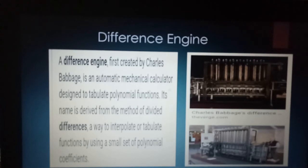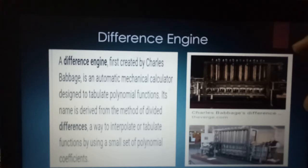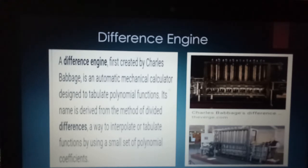Now here comes the father of computer — Charles Babbage. The Difference Engine was created by Charles Babbage as an automatic mechanical calculator designed to tabulate polynomial functions. Its name is derived from the method of divided differences — a way to interpolate or tabulate functions using a small set of polynomial coefficients. In the 19th century, Charles Babbage invented the first mechanical computer, known as the Difference Engine, which was designed to calculate polynomial functions.